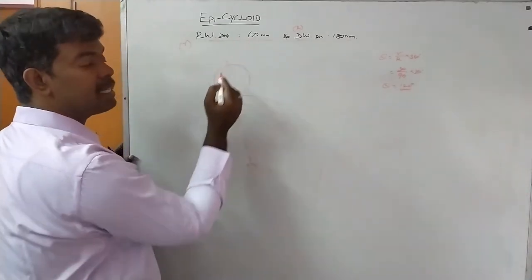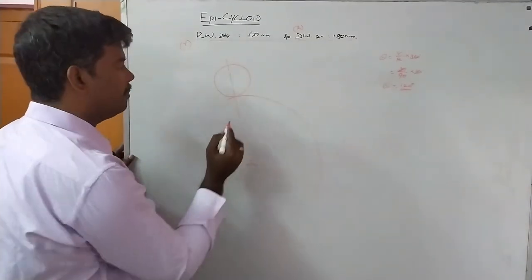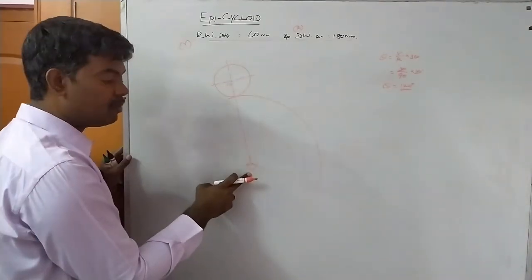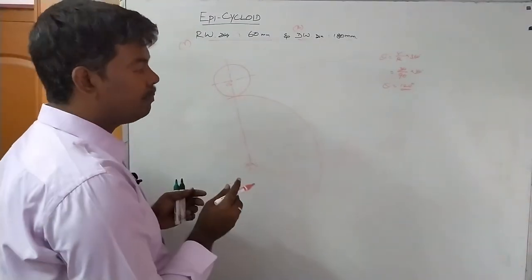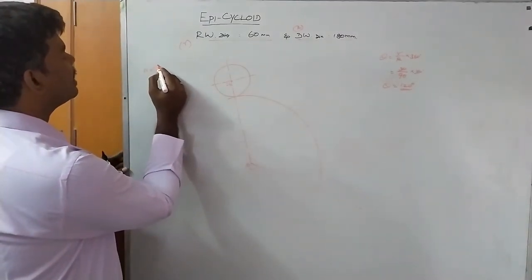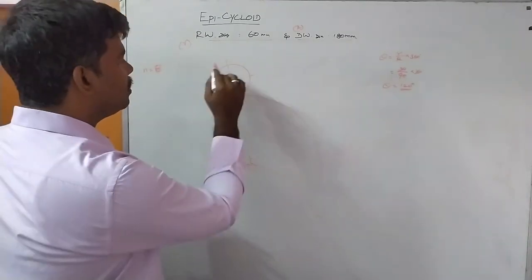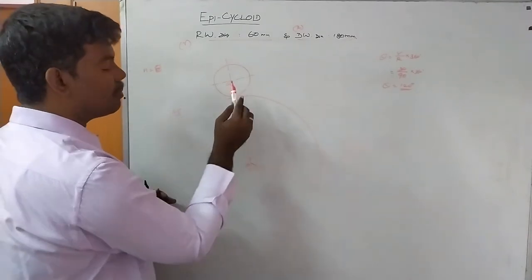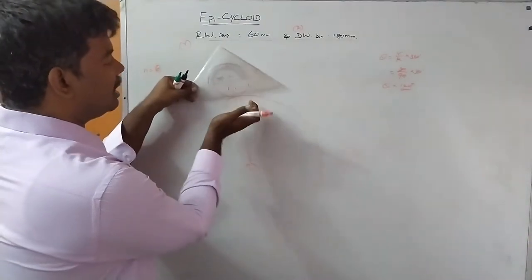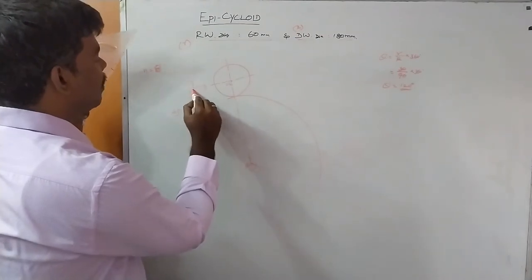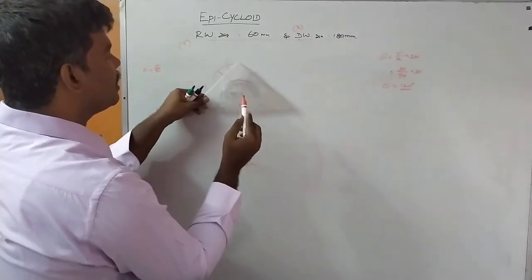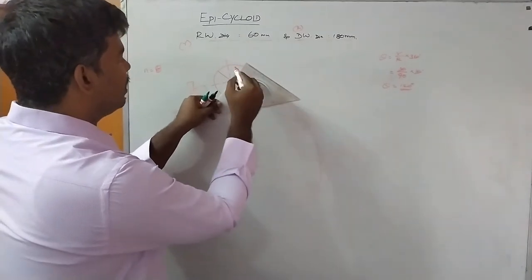The arc has radius 90 mm and the circle has diameter 60 mm. The directing wheel center is O1 and the rolling wheel center is O2. Now divide the rolling wheel circle into n equal parts — let us take 8 equal parts. Each part is 45 degrees, so use a 45-degree set square or protractor to mark the divisions.